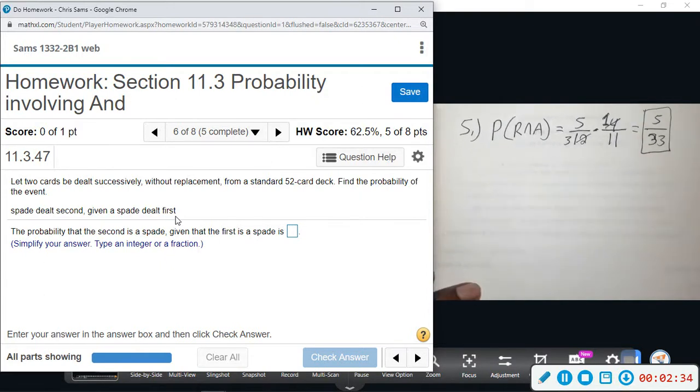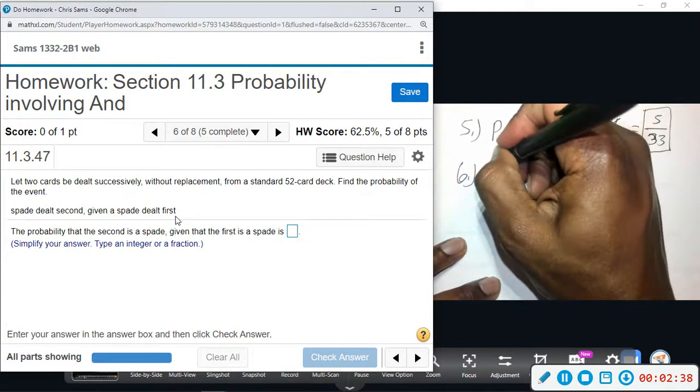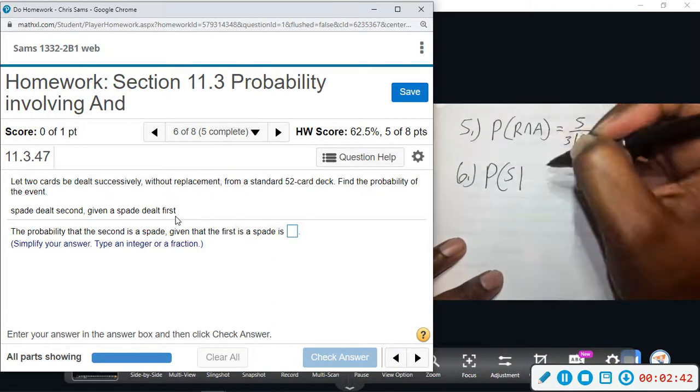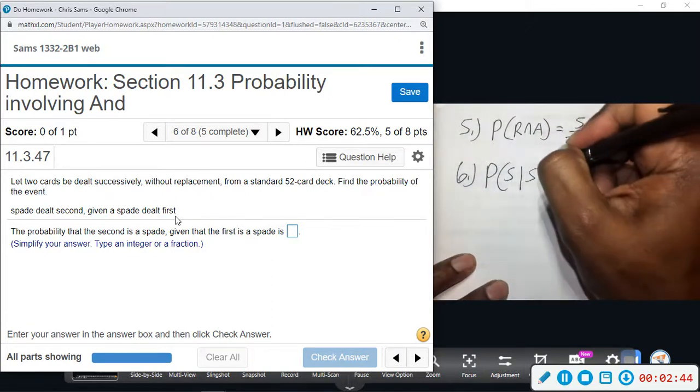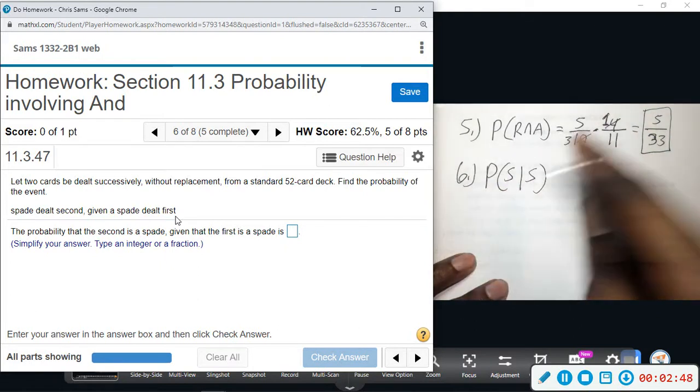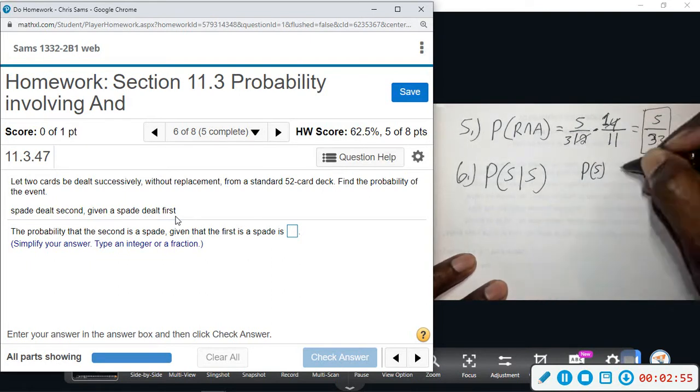So we're looking for the probability that we get a spade second, given that a spade was dealt first. All right, so the probability of a spade is what we got to think about. Probability of getting a spade at first, out of the 52 cards, 13 are spades. Okay, 13 out of 52.